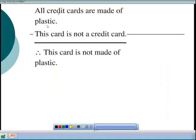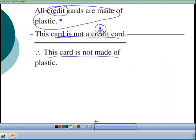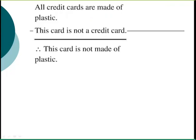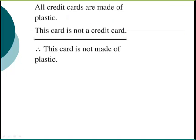All credit cards are made of plastic, so credit cards are in the subset of plastic. This card is not a credit card — we have to be careful, because not being a credit card just means it's not in that subset; it could still be in the plastic circle or outside it entirely. Therefore this card is not made of plastic — but that's invalid, because a debit card is also made of plastic. A counter example like a debit card shows this is an invalid argument.